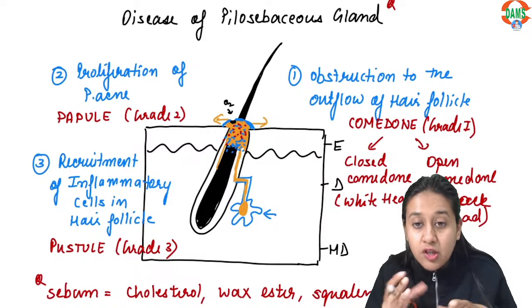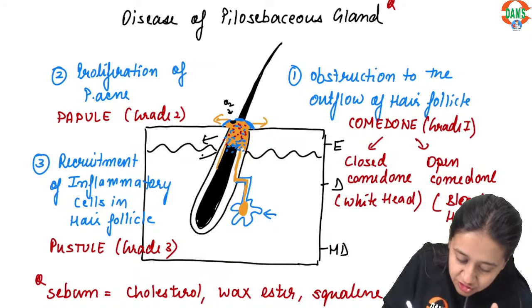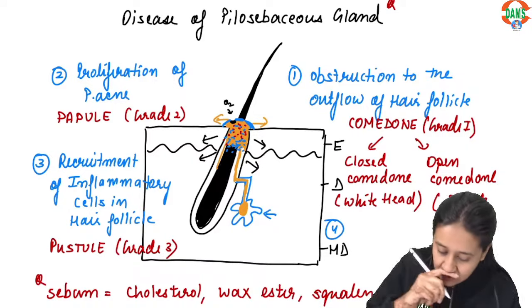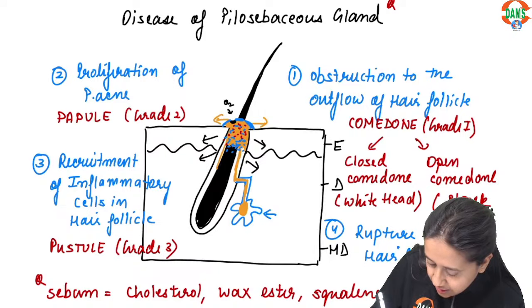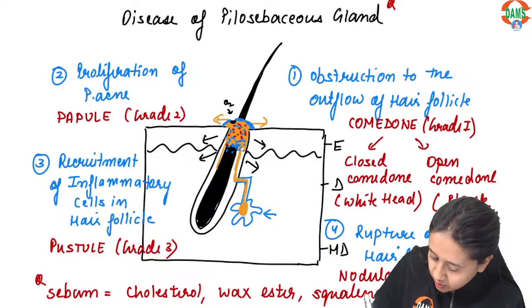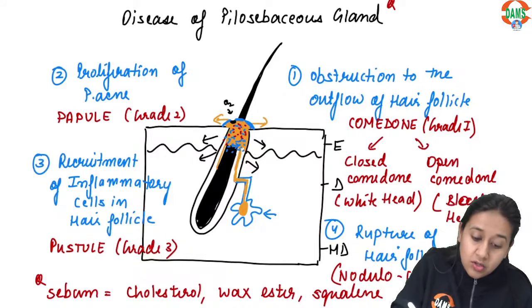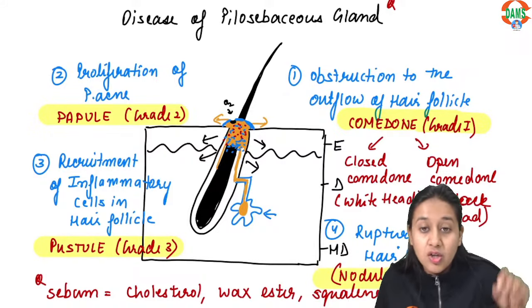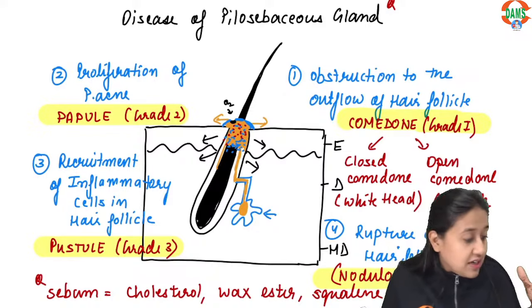Because of the accumulation of sebum, P. acnes, and inflammatory cells inside the hair follicle, the follicle stretches and eventually ruptures. This rupture of the hair follicle gives rise to Grade 4 — nodulocystic acne. To summarize: Grade 1 is comedone, Grade 2 is papule, Grade 3 is pustule, and Grade 4 is nodulocystic acne.